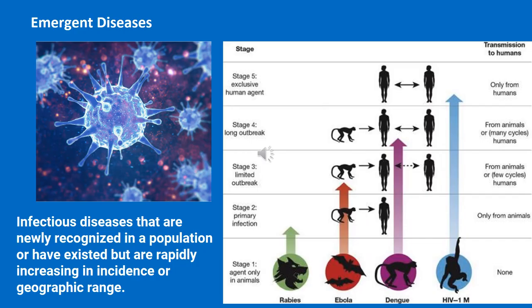An emergent disease is one that may have been around in the background but is newly recognized in a population, or one that rapidly increases in incidence or range. COVID-19 is a great example — it came from the animal kingdom, got into the human population, and expanded rapidly, making it a clear example of an emergent disease.